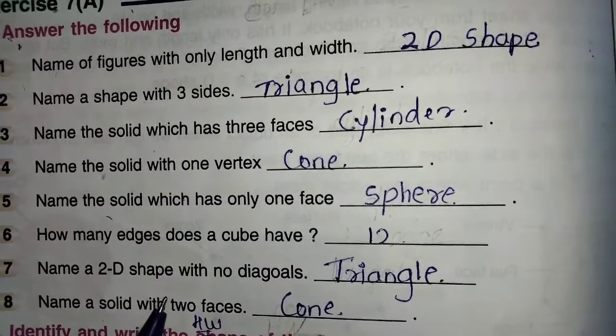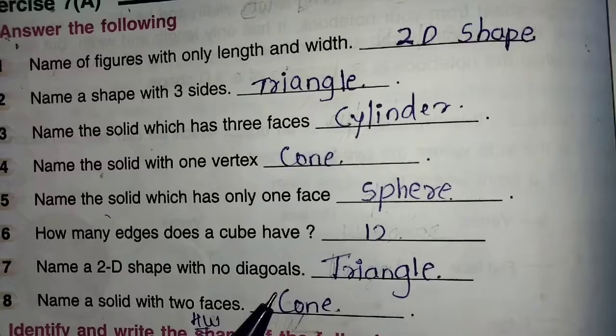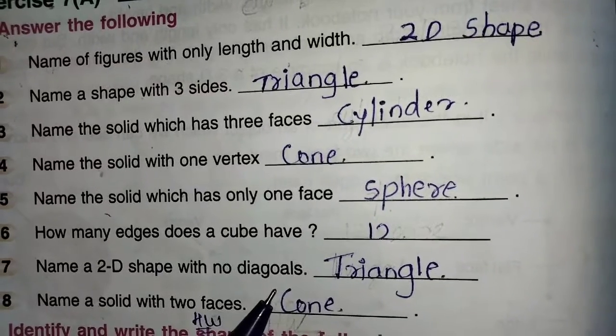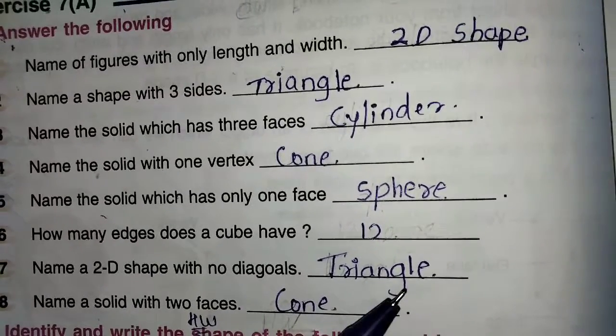Name a 2D shape with no diagonals. It don't have any diagonals only. It is known as a triangle.